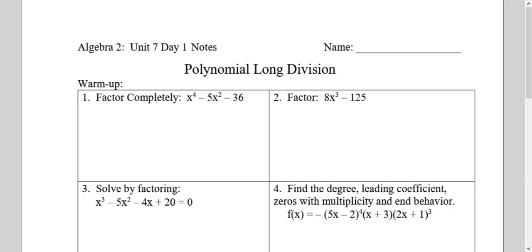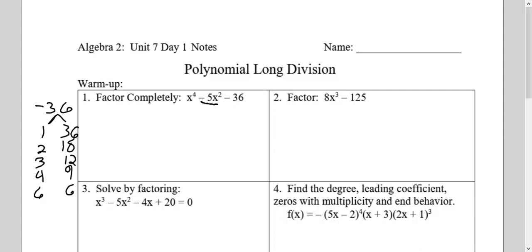I'm going to count the terms. If I have three terms, I'm going to look at the last term, negative 36, and find numbers that multiply together to give me negative 36: 1 and 36, 2 and 18, 3 and 12, 4 and 9, 6 and 6. Since they're going to add up to negative 5, the higher numbers should be negative. 4 and negative 9 add to negative 5.